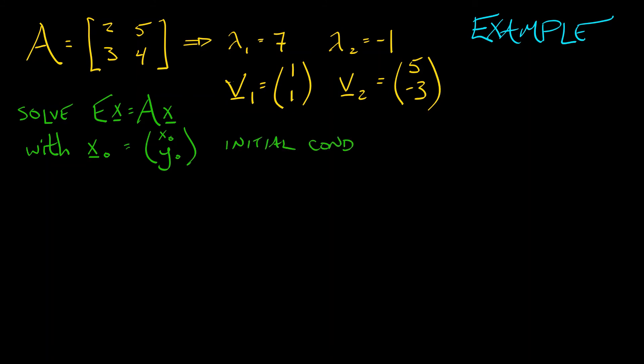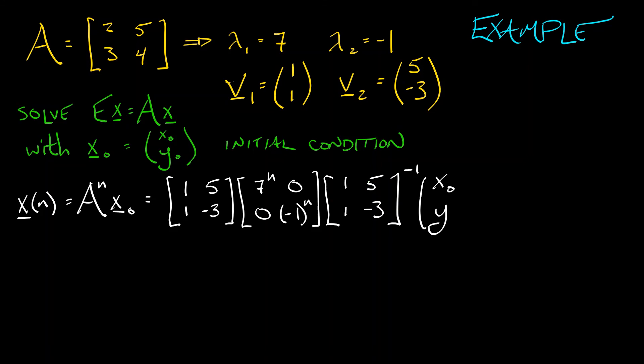To solve the discrete time system, E x equals A x with initial condition x0 and y0. Then what do we do? The vector x at time n is really A to the n times the initial condition. A to the n is what? I take the matrix V, whose columns are eigenvectors. That is 1, 1, 5, negative 3. Then I take lambda to the n. Those diagonal entries are 7 and negative 1 to the nth power. Then I post-multiply by the inverse of this matrix capital V. That is, I take 1, 1, 5, negative 3. Invert that.